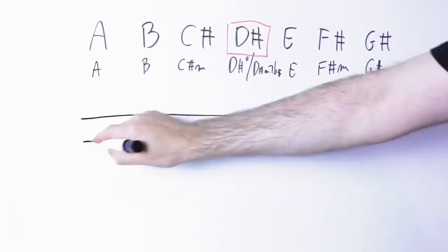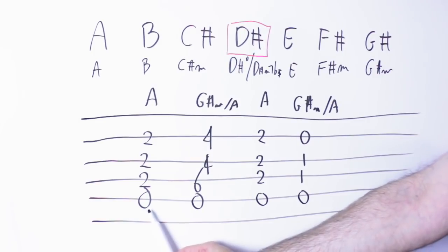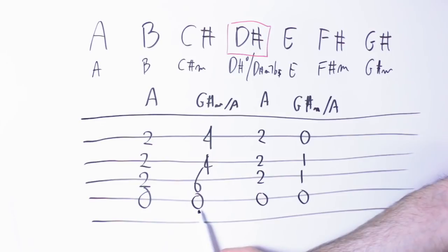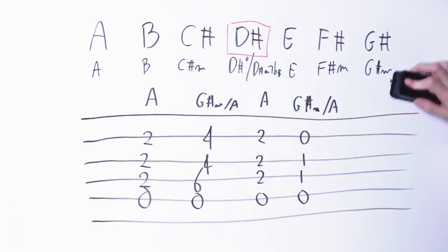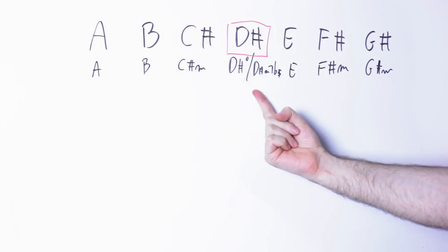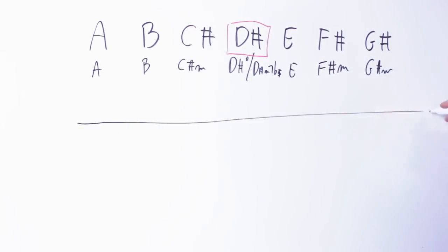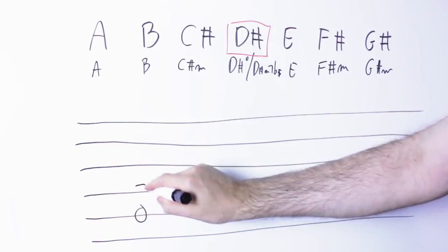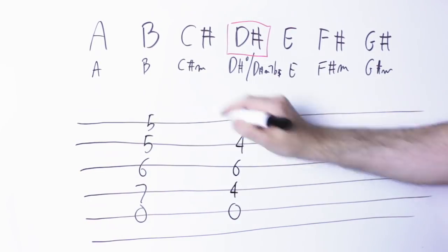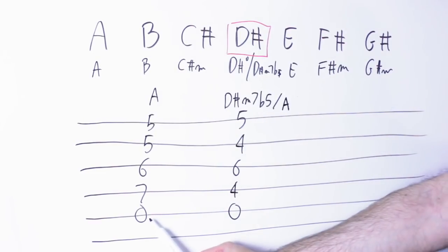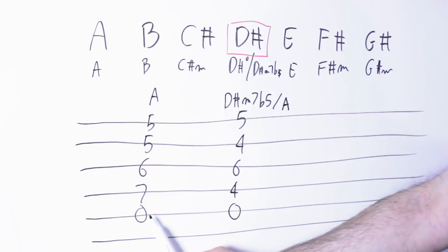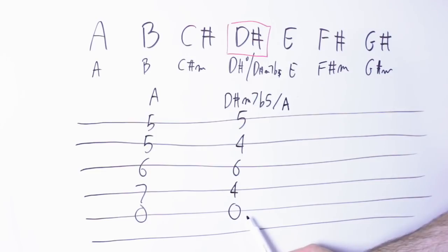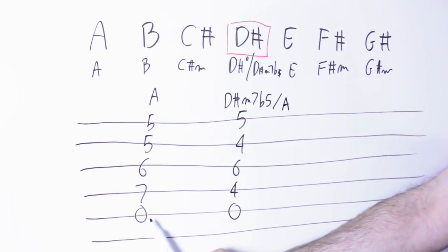Another one is G sharp minor, so I could play A G sharp minor. The other chord that contains D sharp is the D sharp diminished triad. In this case though, it typically sounds best if you play the D sharp minor 7th flat 5 chord rather than just playing the D sharp triad. Again, personal taste, you guys can do whatever you want. Here's A and then D sharp minor 7th flat 5.